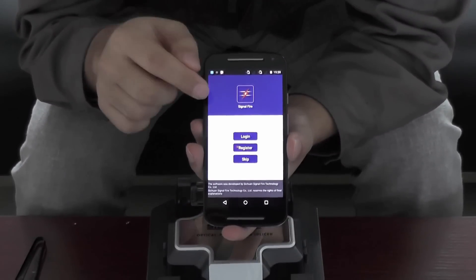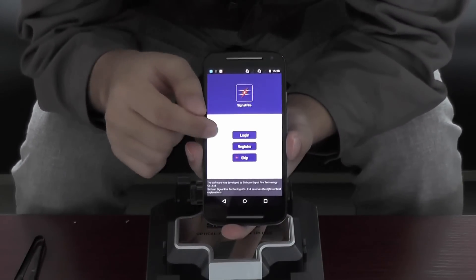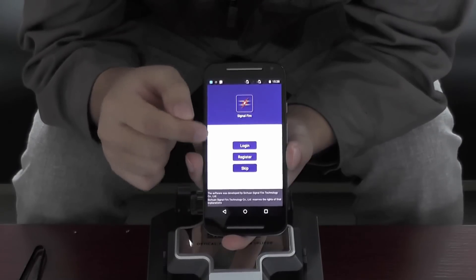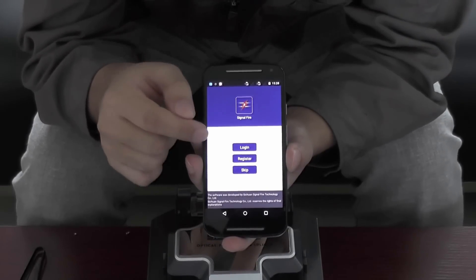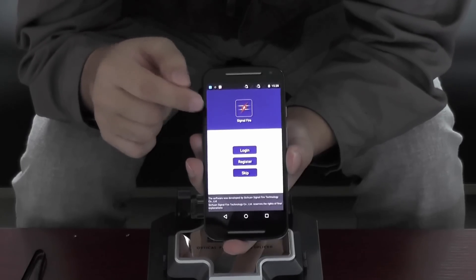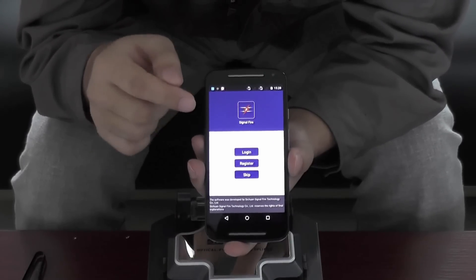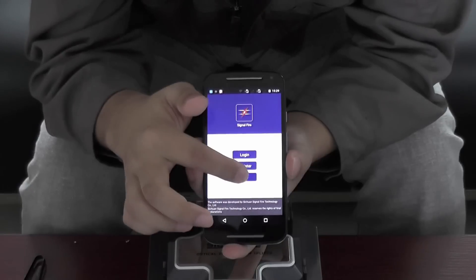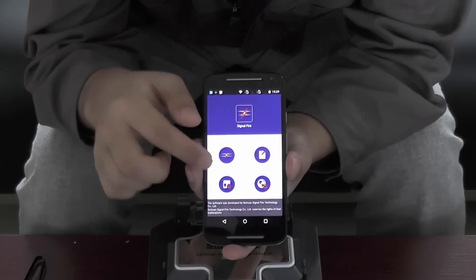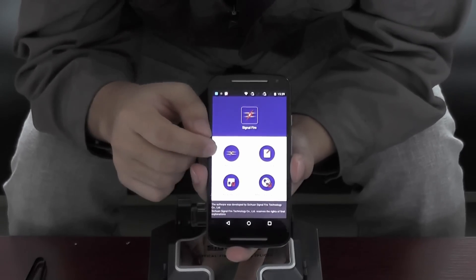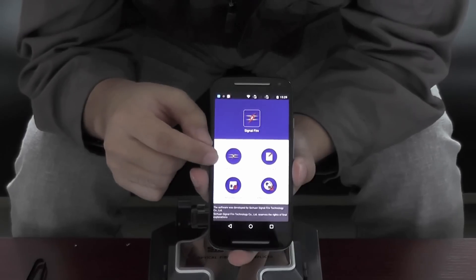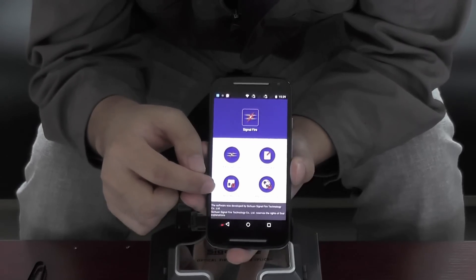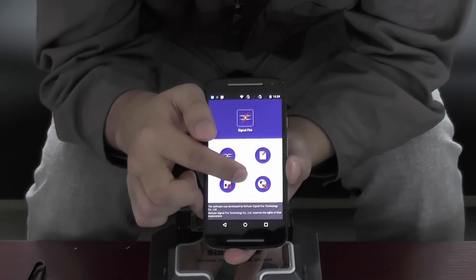When you download and install this app, you can see login, register, and skip. I suggest you better register it because we will provide some services from the application in the future. But now I will skip it. You will see 4 parts: Fiber splicing, Learn how to, Read record, and after sales service.